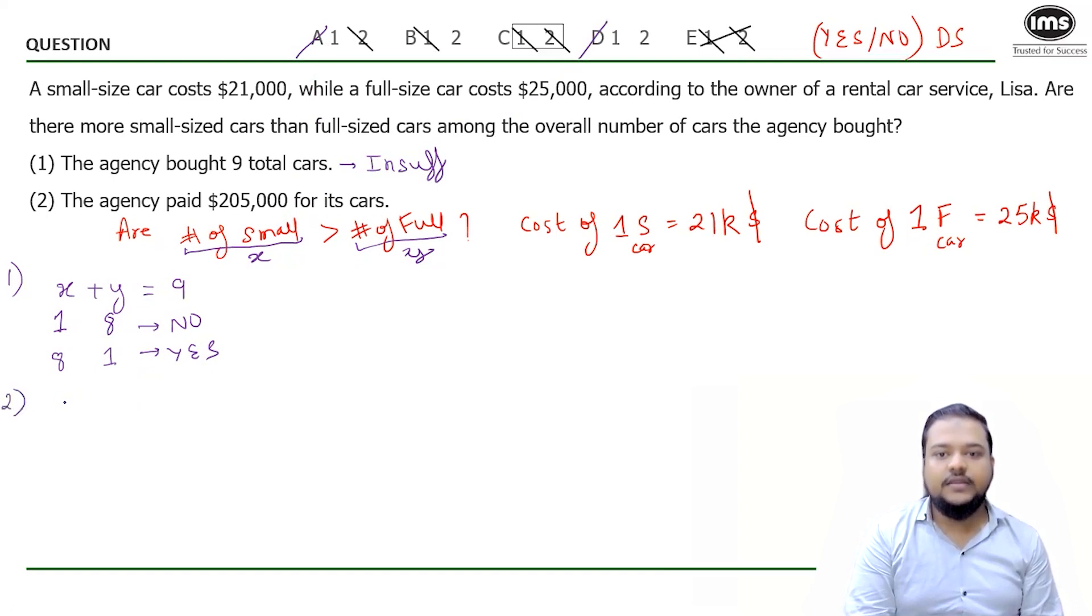Statement two says that the agency paid a total of $205,000 for its cars. We know that one small car costs 21,000. And if X cars are bought, can I say total amount spent on small size cars will be 21,000 into X. And similarly, total amount spent on full size cars will be 25,000 into Y. And that sum will give you the total amount spent, that is $205,000.